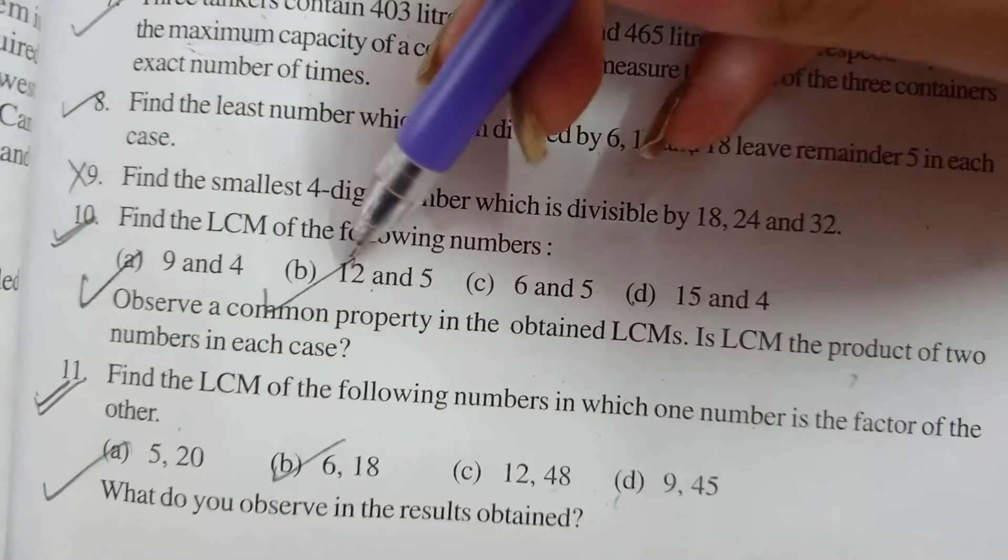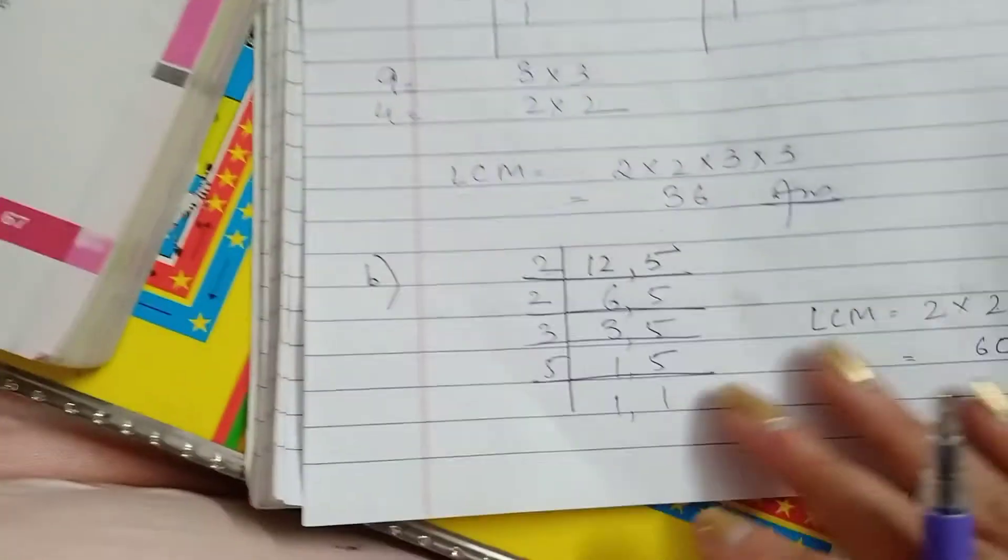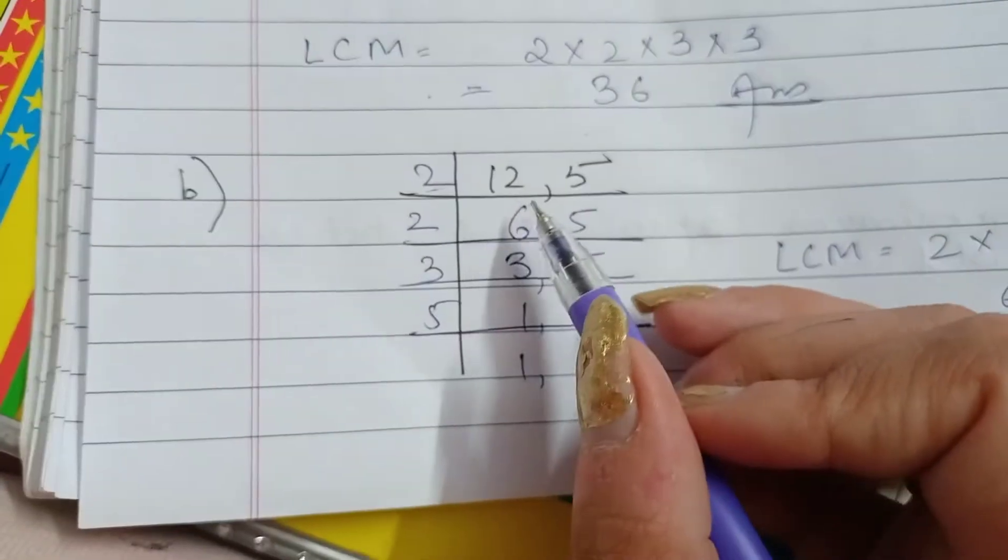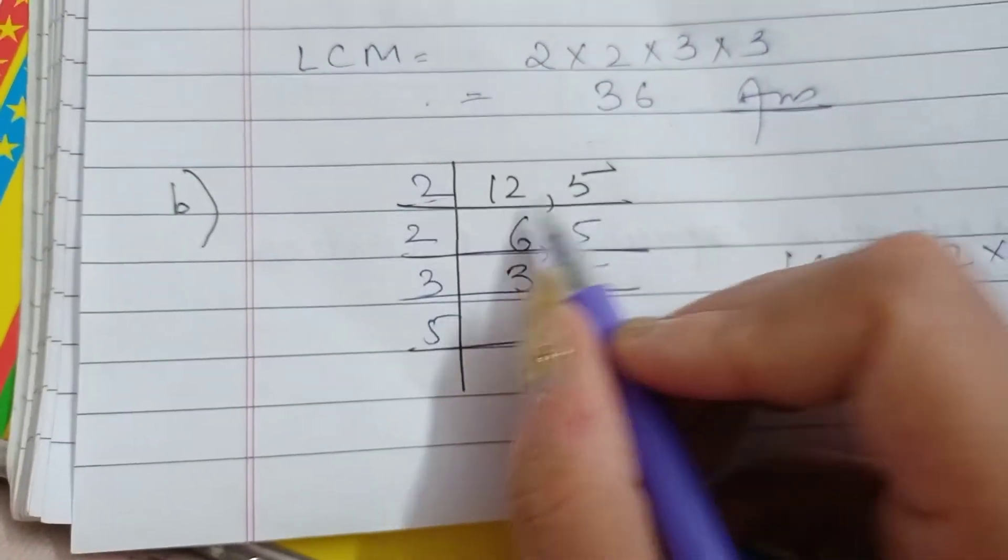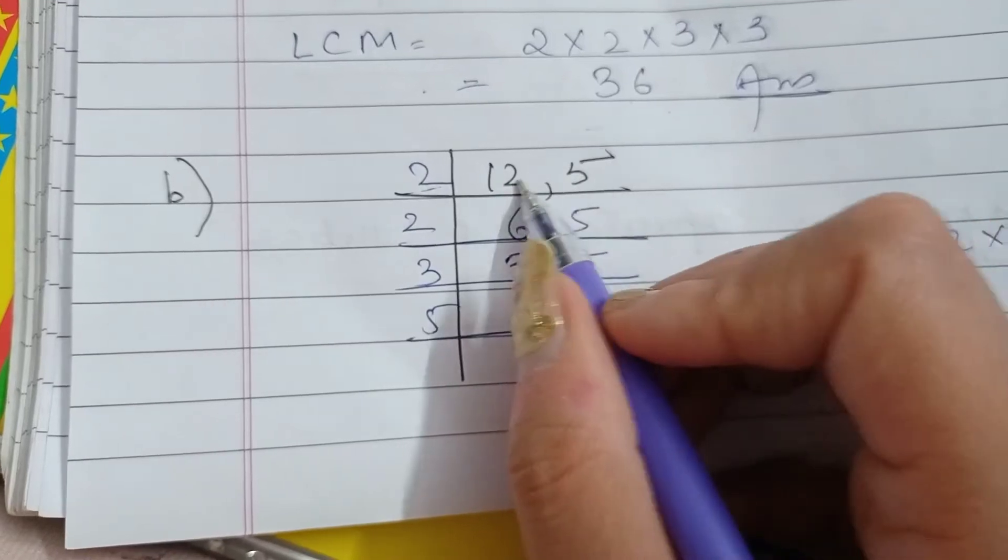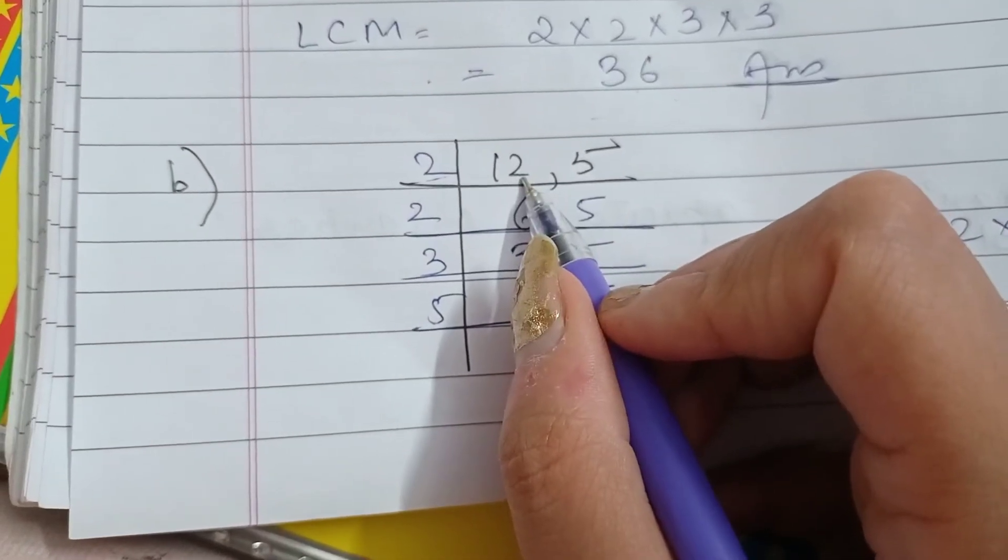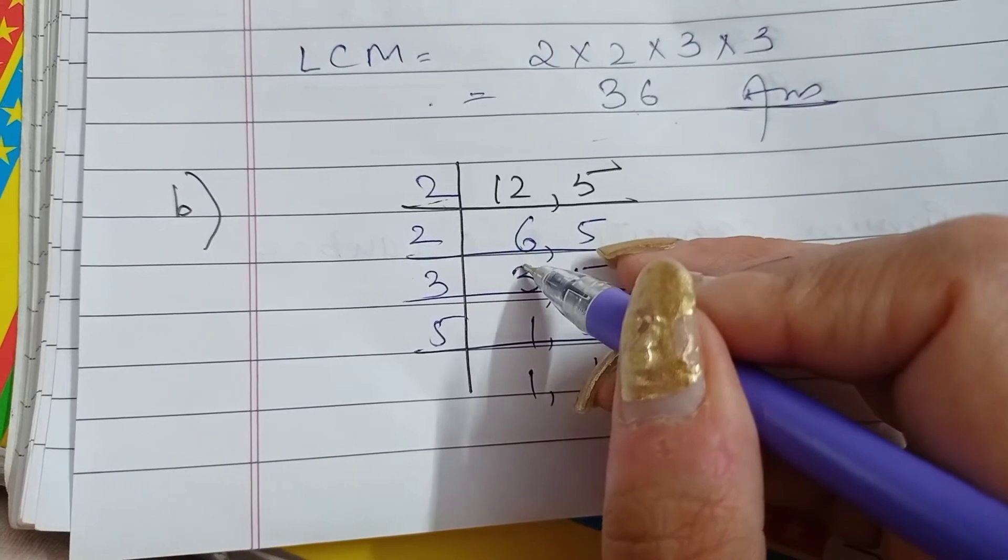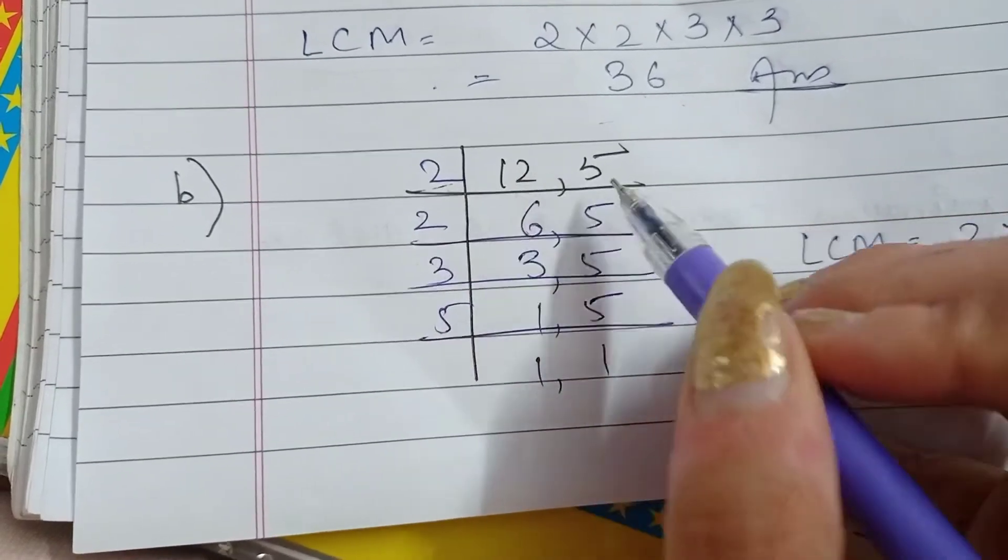Let us move ahead with part B, 12 and 5. Now here 12 and 5 I have done with long division method. I have written both the numbers together. Again they both are prime numbers. There is no common multiple for it. So I am dividing it with separate numbers. 2, 6 are 12.